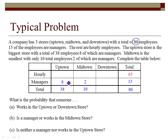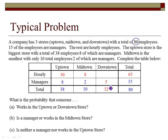Looking at the uptown column, the hourly employees must be 30 since 8 plus 30 equals 38. For midtown, 2 plus 8 equals 10, so 8 hourly employees. That gives a subtotal of 48, and 80 minus 48 gives 32 employees in the downtown office. The managers have to add up to 15; I've used 10, leaving 5 for downtown managers. Then 32 minus 5 equals 27 hourly downtown employees.